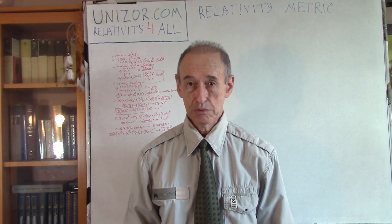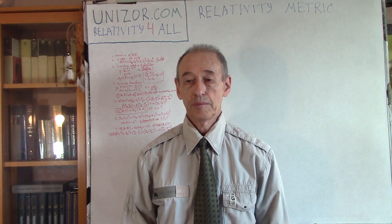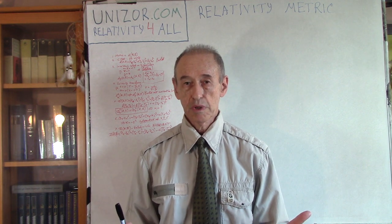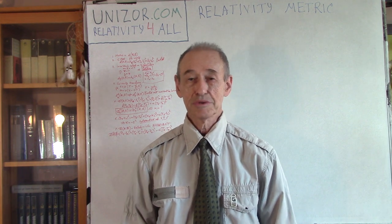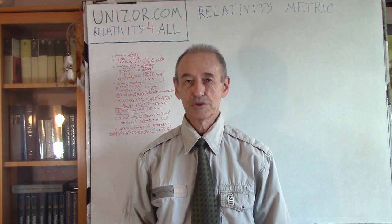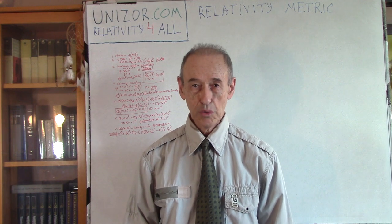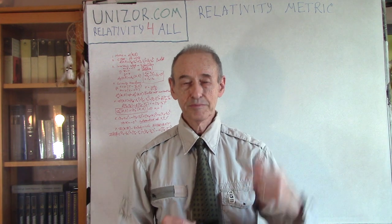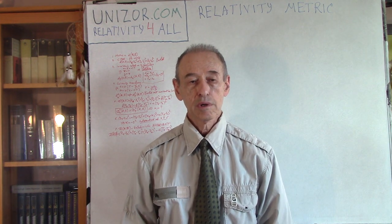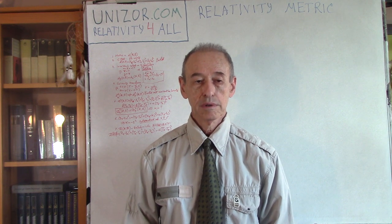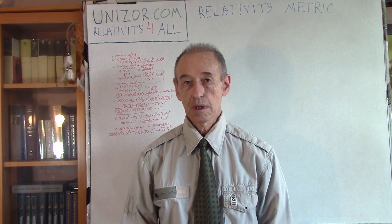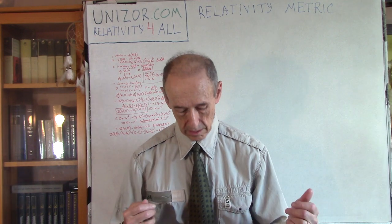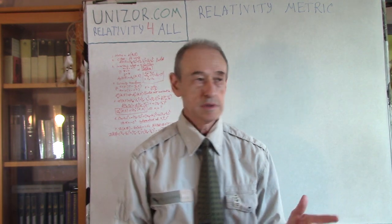Metric is basically a distance between two points in space. In our space, which we can consider for a very long time to be three-dimensional, we usually use Cartesian coordinates X, Y, and Z. In our world, which we consider three-dimensional, we use Euclidean metric as a distance between two different points.